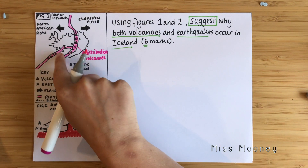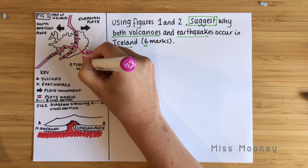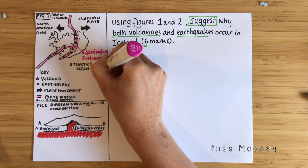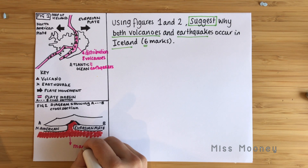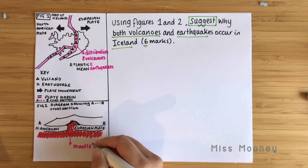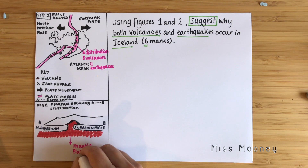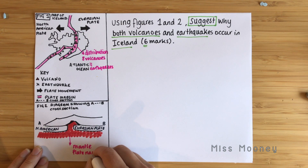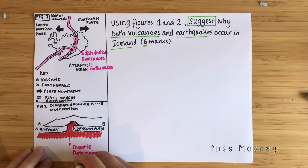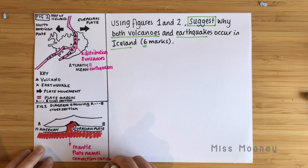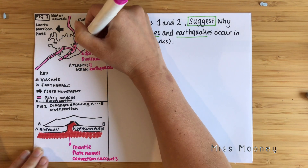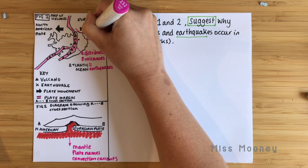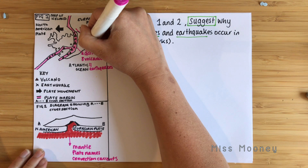I've noticed that figure one gives us a distribution showing eight volcanoes and eleven earthquakes on the map. Looking at figure two, it shows us the mantle beneath the Earth's crust. They've given us the plate names — North American and Eurasian plate — in figure one. From general knowledge, I want to use key terms like convection currents in my answer. Figure one also shows that the plate margins are moving away from each other, so this is a constructive plate margin — I'm jotting this down to make sure I include it in my answer.